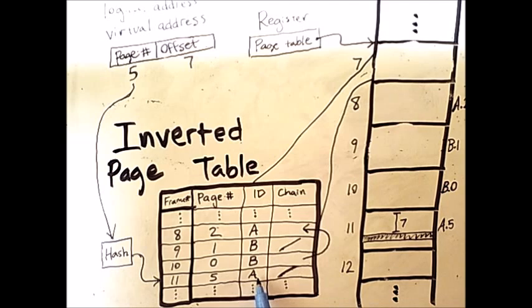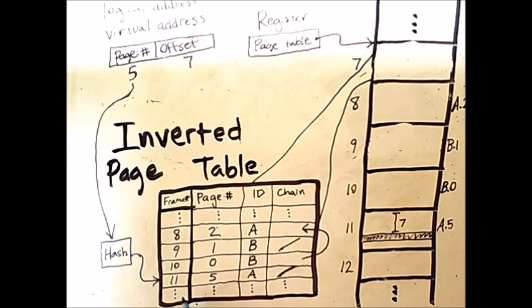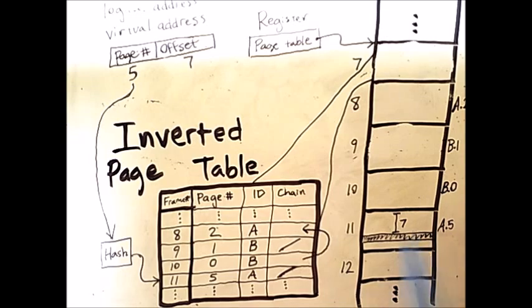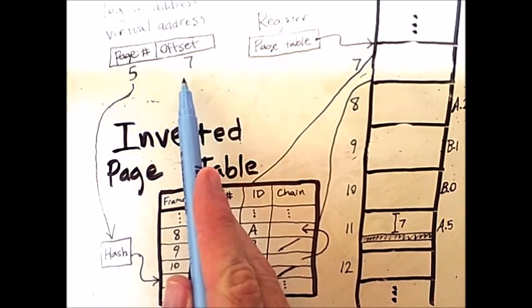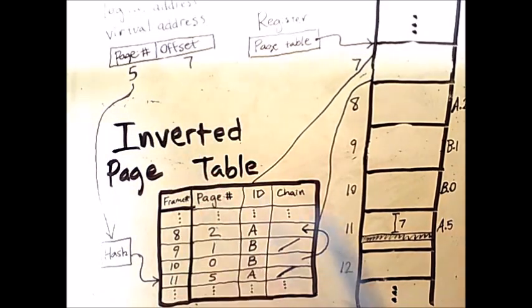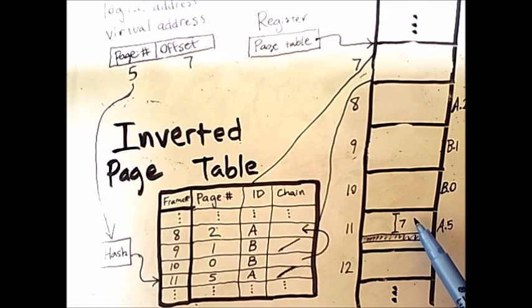Anytime we are executing a process, we will know which process it is. If the process matches and the page number is what we are expecting, then we know that the frame number we have found is in fact the location of the page we are looking for. So we go to that frame number, in this case 11. We take the offset from the virtual address, take that 7, add it to the beginning of frame 11 to get the address we are looking for.